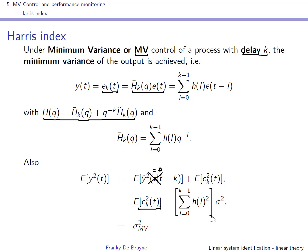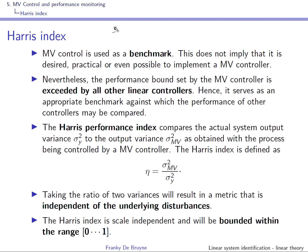H bar has been obtained by decomposing H of Q, where H bar contains the first K components of the impulse response of the noise model. The variance of Y using a minimum variance controller is simply the variance of the H bar sequence. You can compute it: it's sigma squared times the sum up to index K minus one of the impulse response squared. This is sigma squared associated with the minimum variance control — our benchmark value.